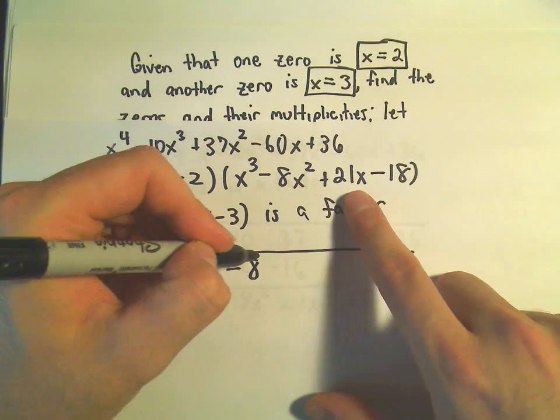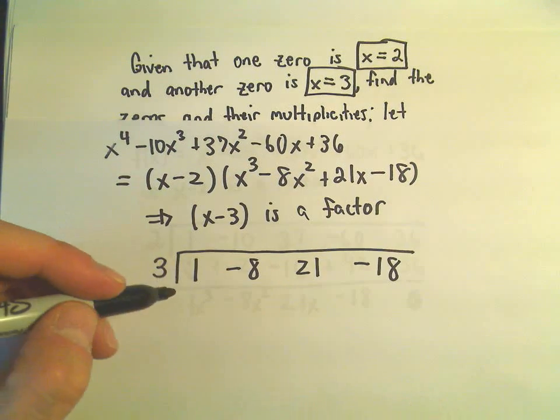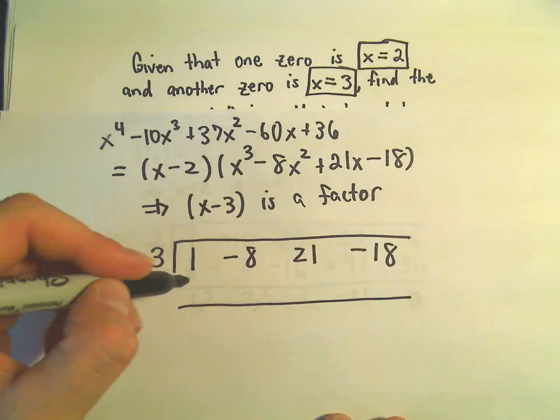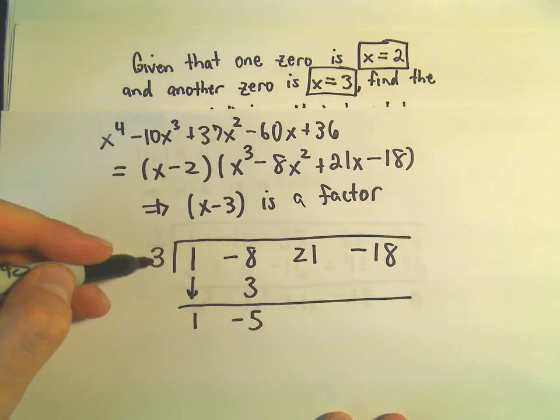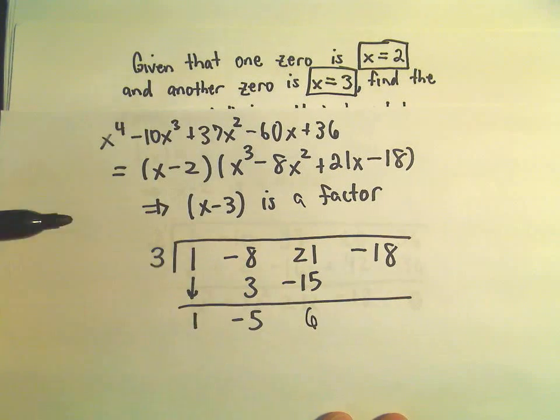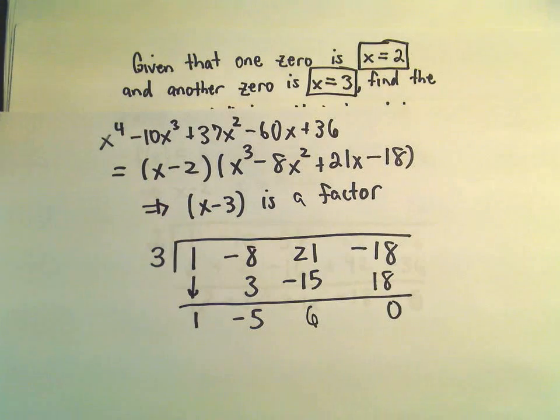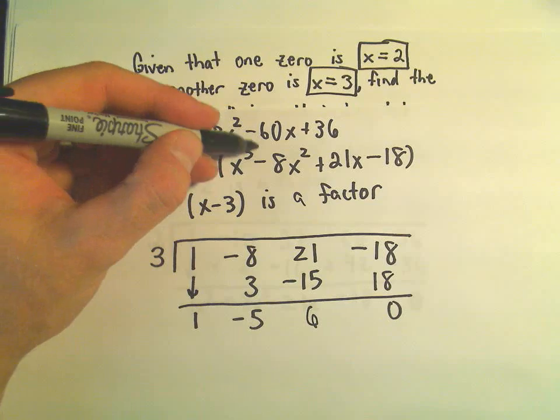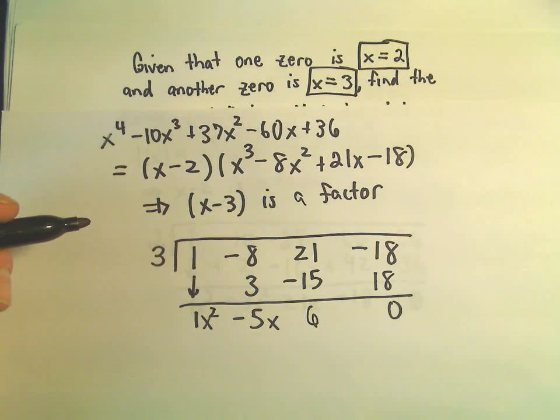So 1, negative 8, positive 21, negative 18. So I'm going to drop the 1 down. 3 times 1 is 3. If we add those we'll get negative 5. 3 times negative 5 is negative 15. If we add those we'll get positive 6. 3 times 6 is 18. So we get our remainder of 0. Since we started with something cubed, this will now be our x squared term, our x term, and our constant.